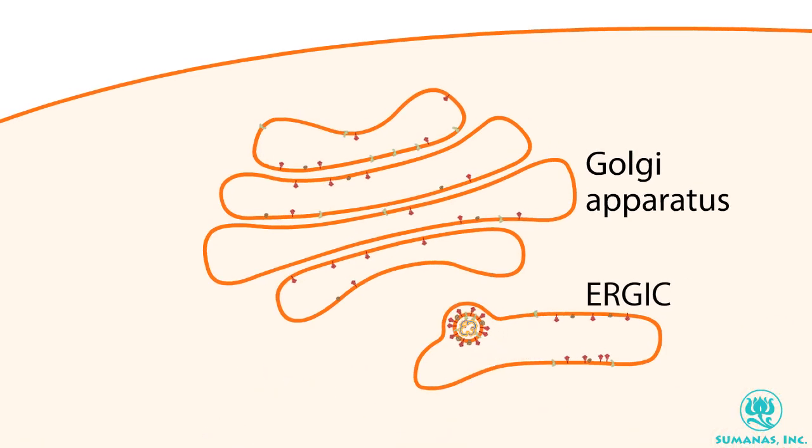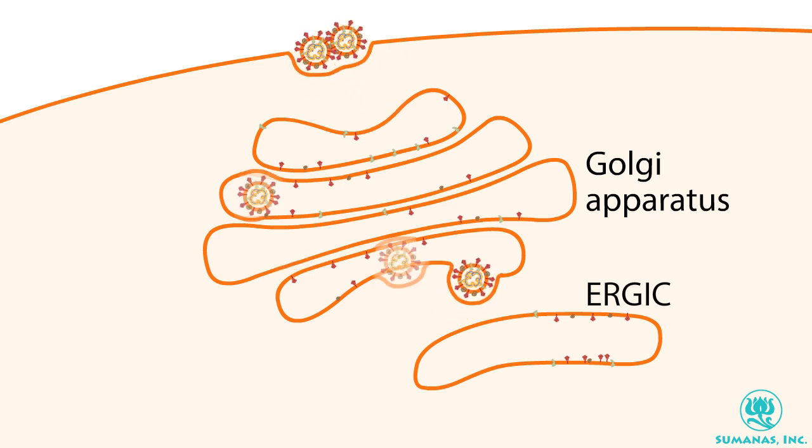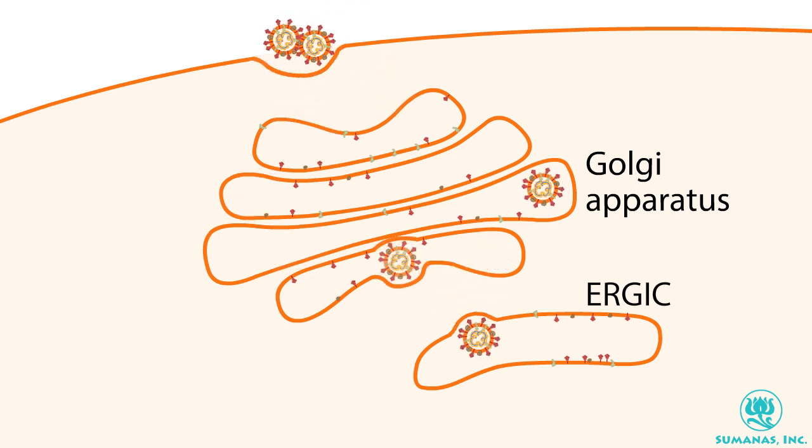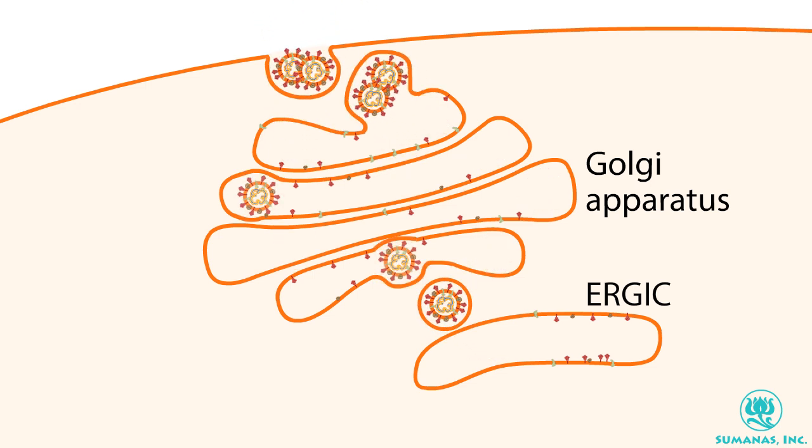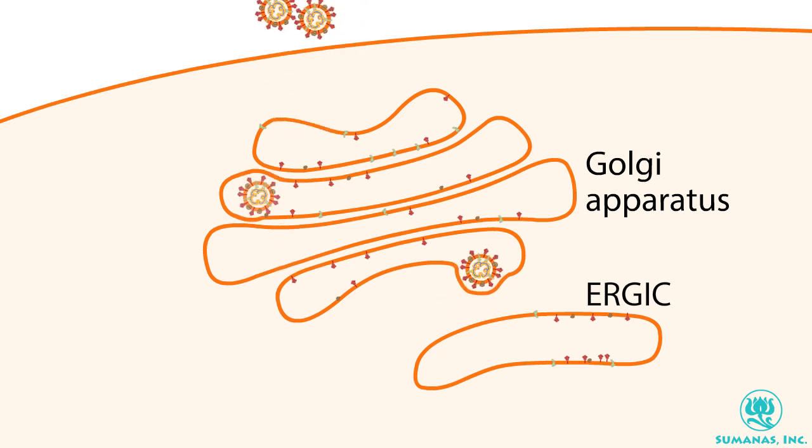The virus hijacks the cell's secretory machinery, pushing newly-made viruses through the Golgi apparatus, and eventually to the cell membrane, where vesicles full of viruses fuse with the cell membrane, releasing new coronaviruses outside the cell.